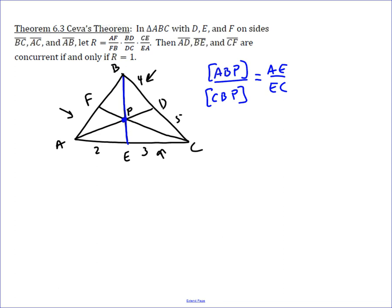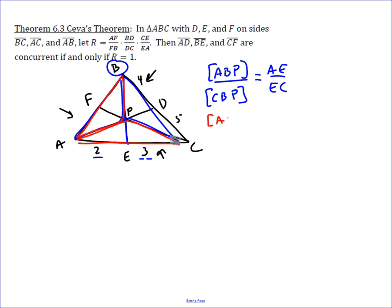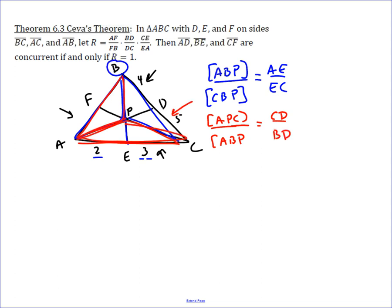So triangle ABP over triangle CBP — we're using point P and B in both of them. If you look at the opposite sides, that ratio gives the ratio of the areas of those two triangles. Doing that all the way around: the area of APC over the area of ABP is going to equal CD over BD, because triangle APC is associated with CD and triangle ABP is associated with BD by this theorem.